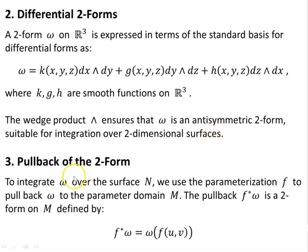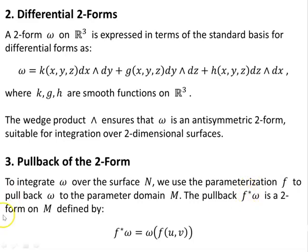Now the pullback of a two-form: to integrate omega over the surface N, we use the parameterization F to pull back omega to the parameter domain M. The pullback F* omega — that's the pullback of omega under the map F — is a two-form on M, defined by F* omega equals omega evaluated at F(U,V), the surface parameterized in terms of variables U and V.